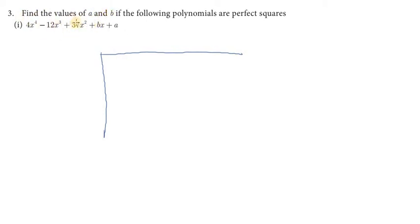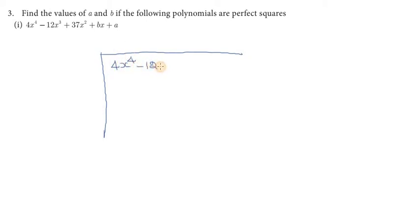In the perfect square, we have to find the A and B values. So the first question is: if you want to see A and B, you will look at all the terms in order.